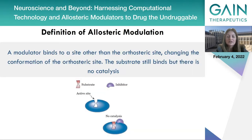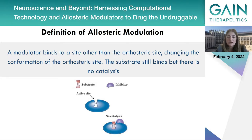What is allostery exactly? Allostery is a phenomenon when a ligand or modulator binds to a site other than the orthosteric or active site, changing the conformation of the orthosteric site. The substrate can still bind, but no catalysis can happen because the allosteric inhibitor or modulator has changed the conformation of the active site and the substrate can no longer perform catalysis.